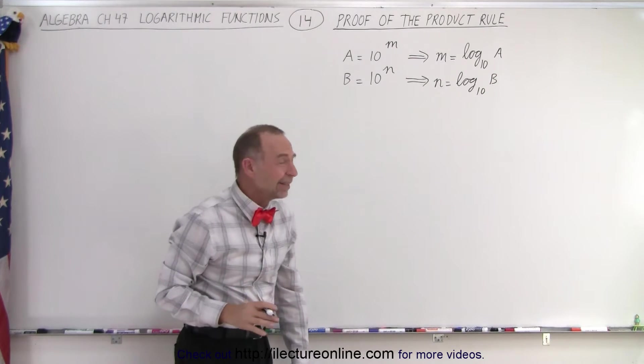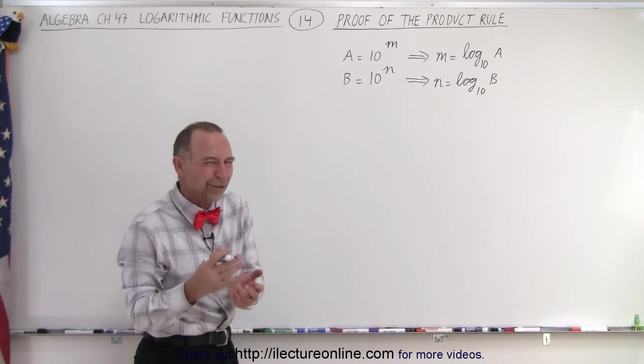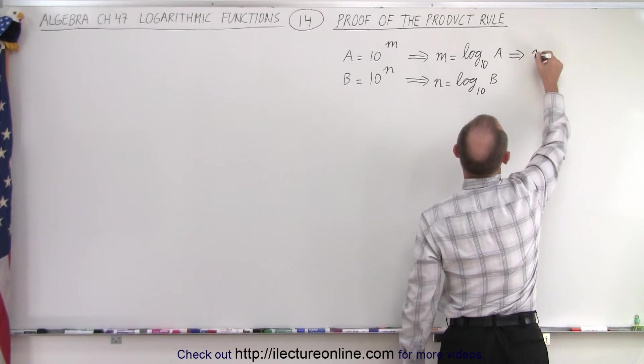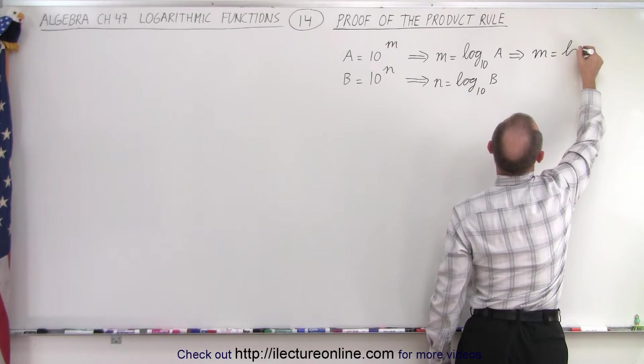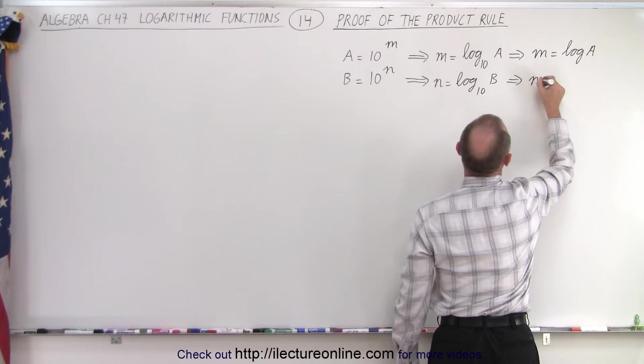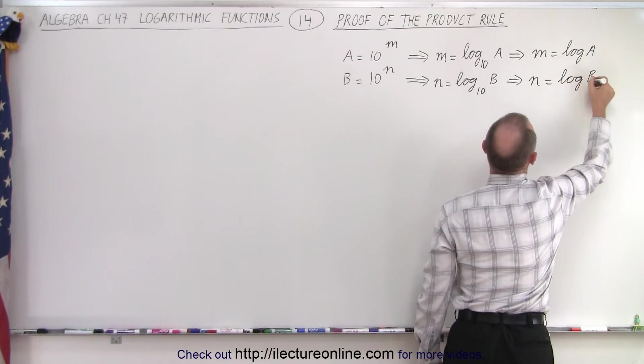Now of course the log of base 10, that's called a common logarithm. We don't need to write base 10. We can simply write it as follows: m is equal to the log of A and n is equal to the log of B.